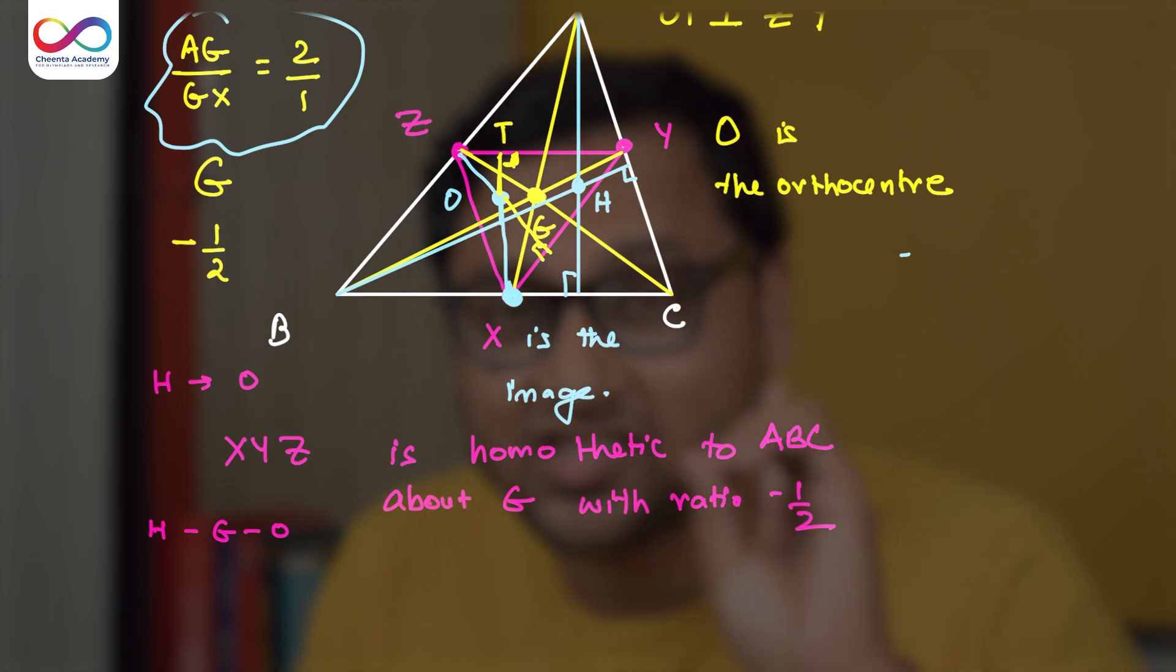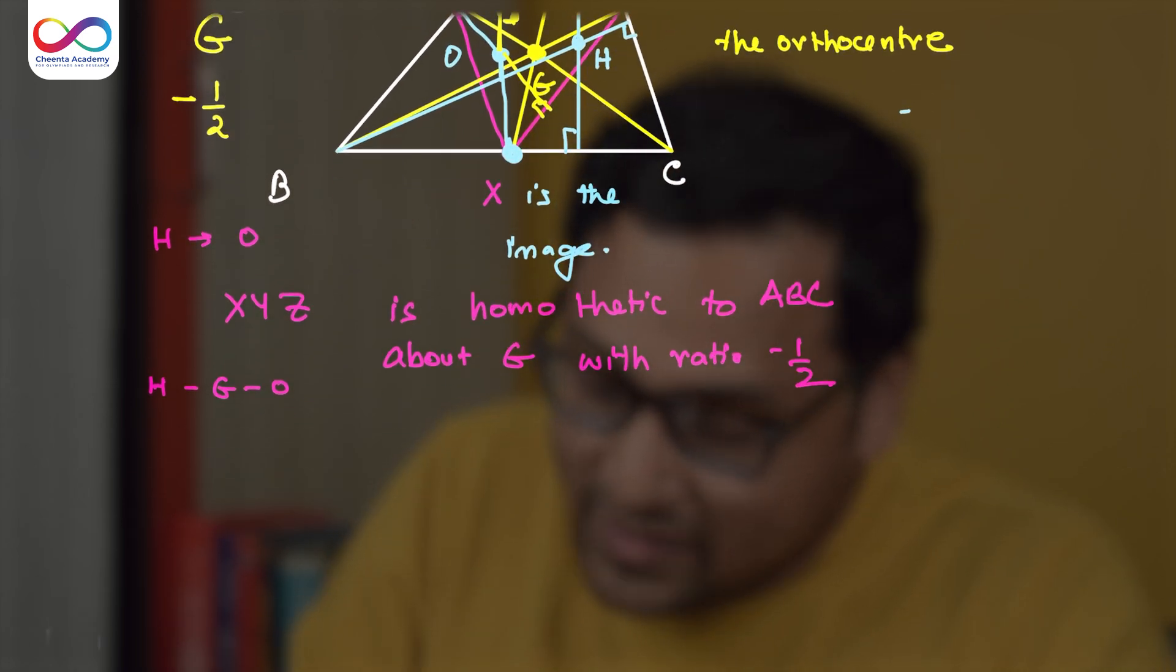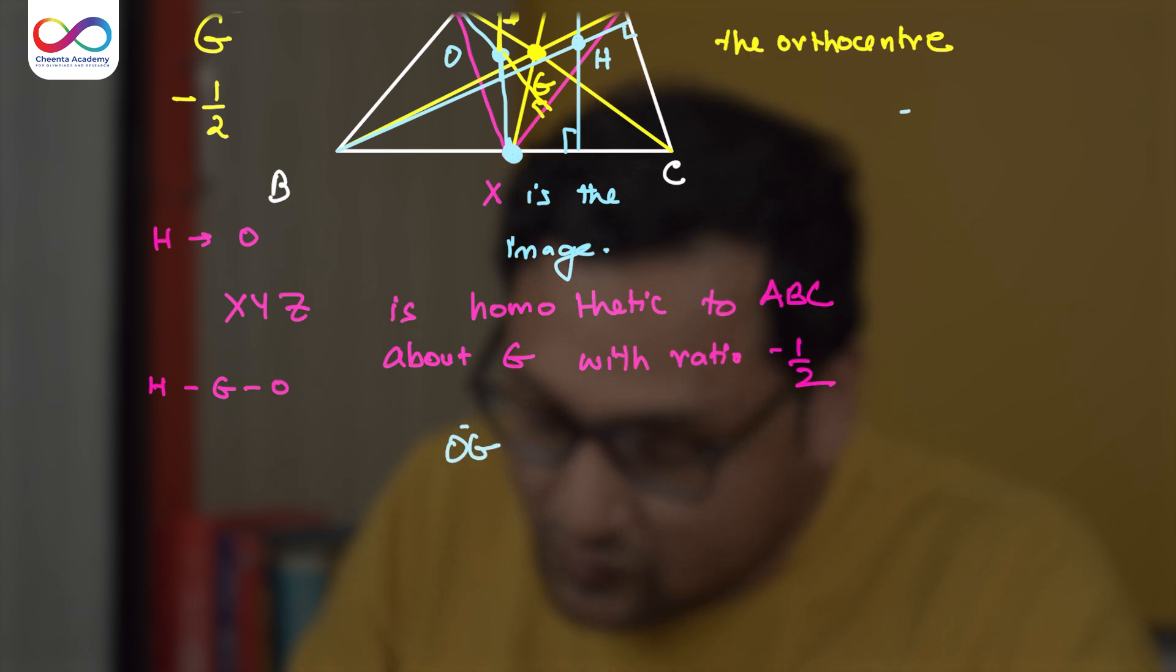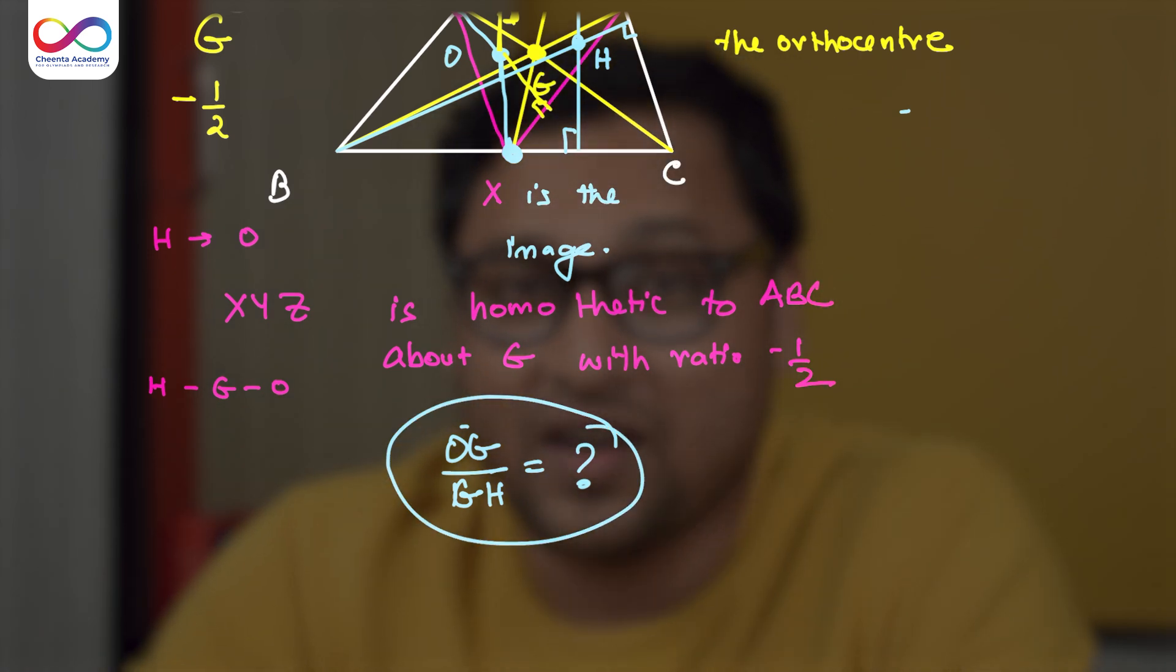And I have the challenge problem right now for you. Can you tell me what is the ratio of OG over GH with the things that we have discussed so far?